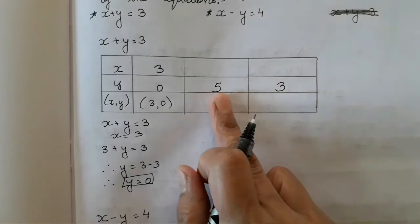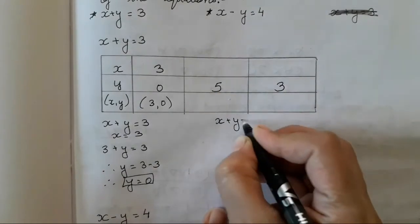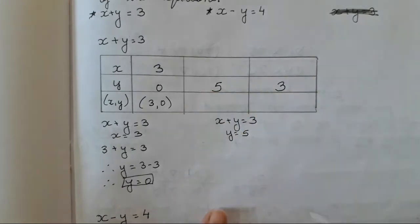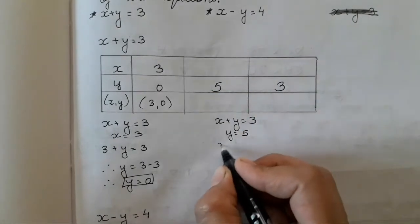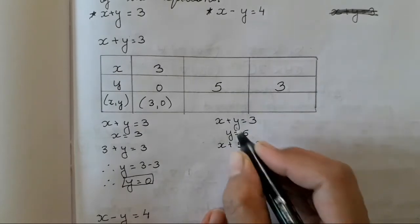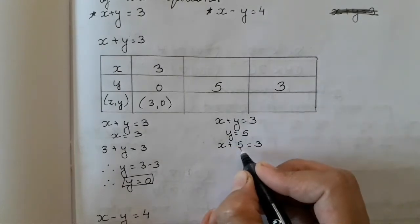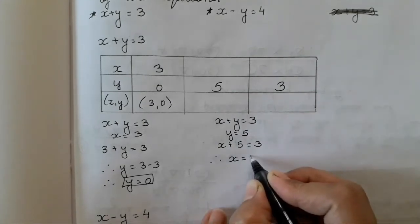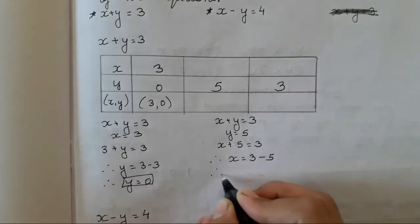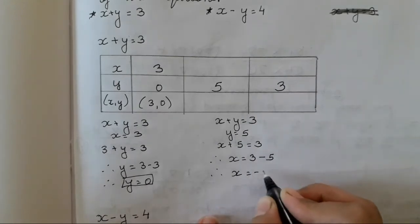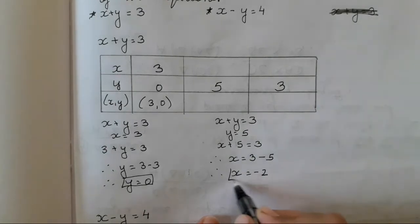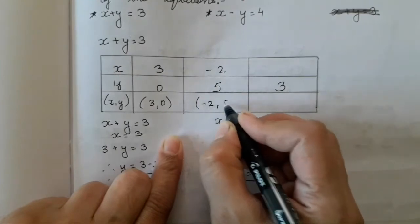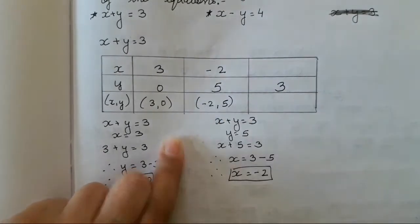For the second entry, y is given as 5 — don't change the equation. So x plus 5 is equal to 3, therefore x is equal to 3 minus 5, therefore x is equal to minus 2. So we have got our x variable as minus 2, giving the pair (−2, 5).